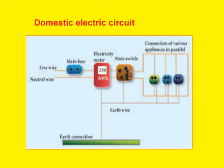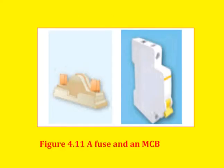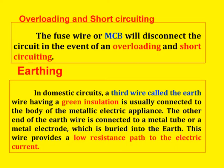Next, the domestic electric circuit. In our homes, electricity is distributed through domestic electric circuits wired by electricians. The first stage is to bring the power supply to the main box from a distribution panel such as a transformer. The important components of the main box are a fuse box and a meter. The meter records the consumption of electrical energy. The fuse box contains either a fuse wire or a miniature circuit breaker (MCB). The function of the fuse wire or MCB is to protect household electrical appliances from overloading due to excess current. The fuse wire or MCB will disconnect the circuit in the event of overloading and short-circuiting.